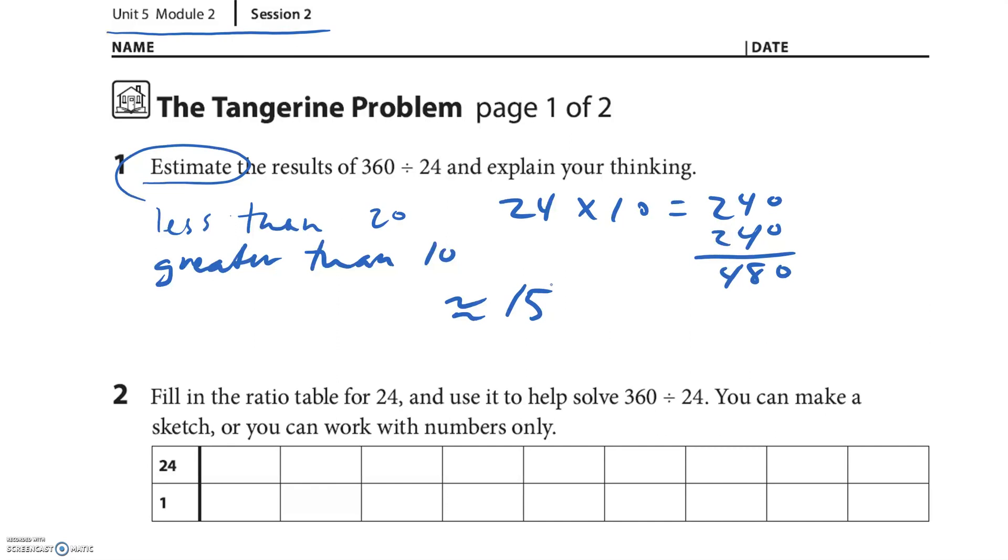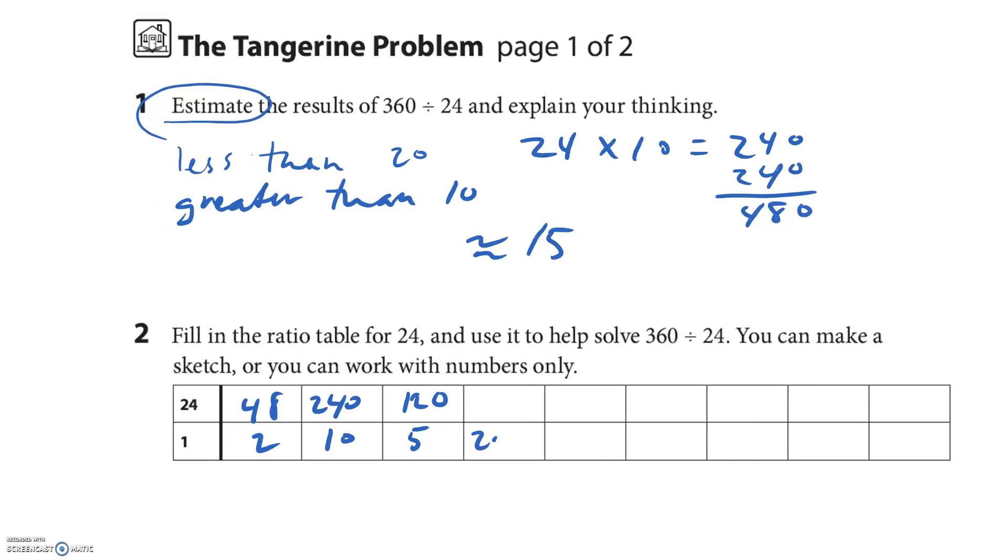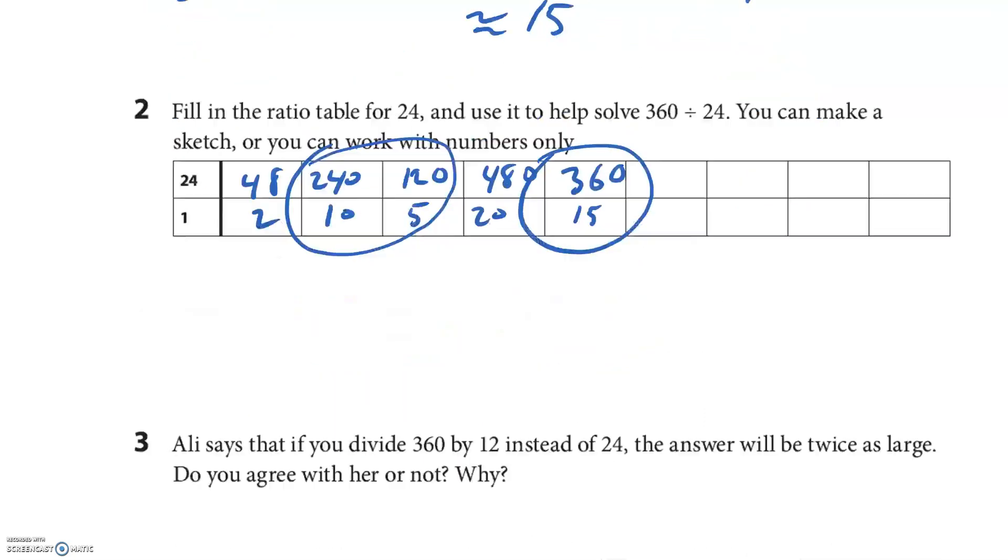To fill the ratio table for 24 and use it to help solve the problem. So they said 24, 4 times 1 or 24, and 1 times 48 would be 2. 1 times 10 would be 240. 5 would be 120. We did 20 is 480, we knew that right? But look at this, 15 would be 360. Exactly. That's kind of cool that worked out for us.